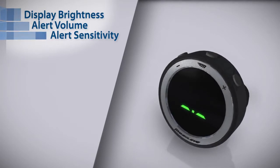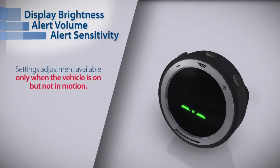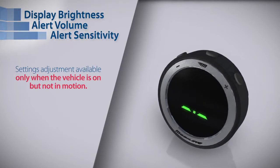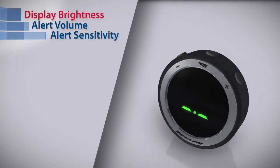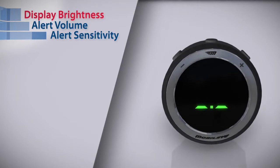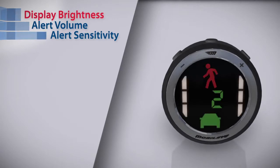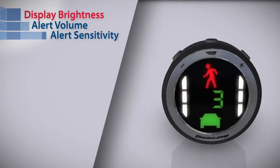For your safety, you can only adjust these settings while your vehicle is on but not in motion. To access the brightness setting, press the middle button once. Then press the plus or minus button to adjust the brightness to the desired level.